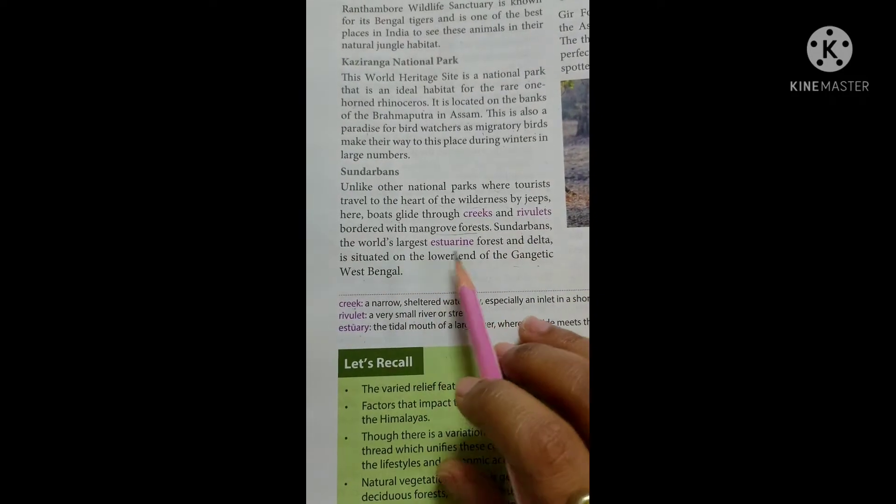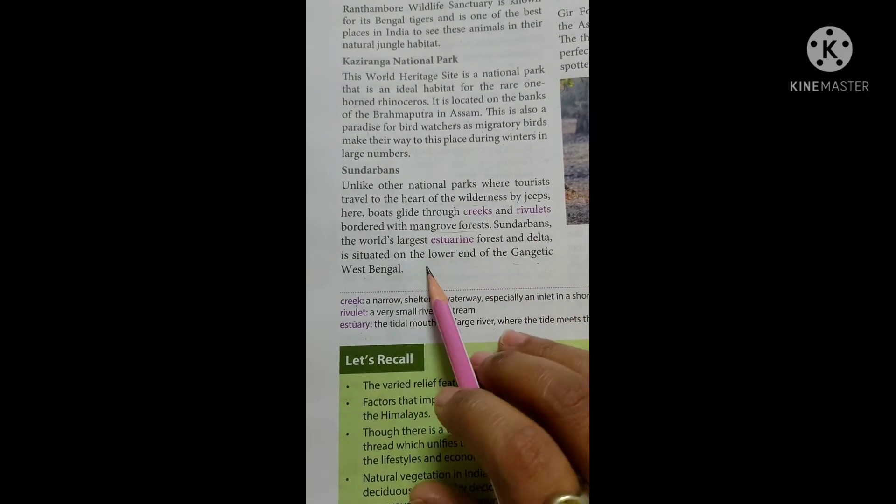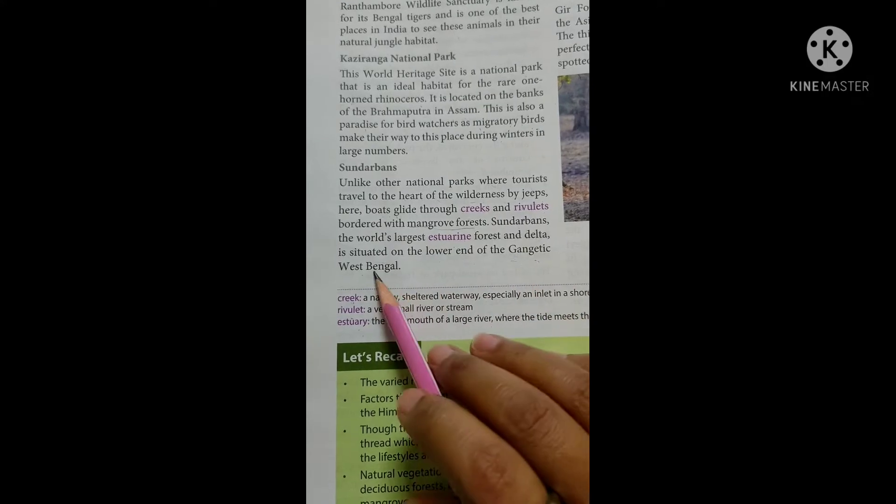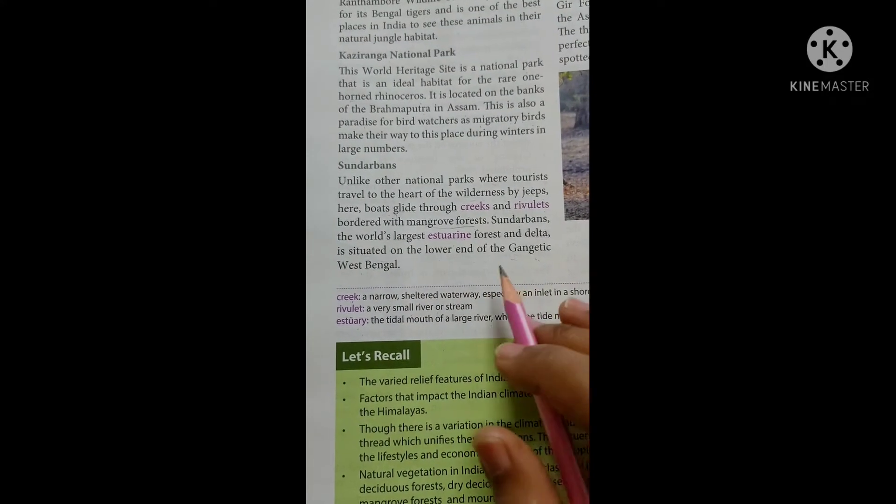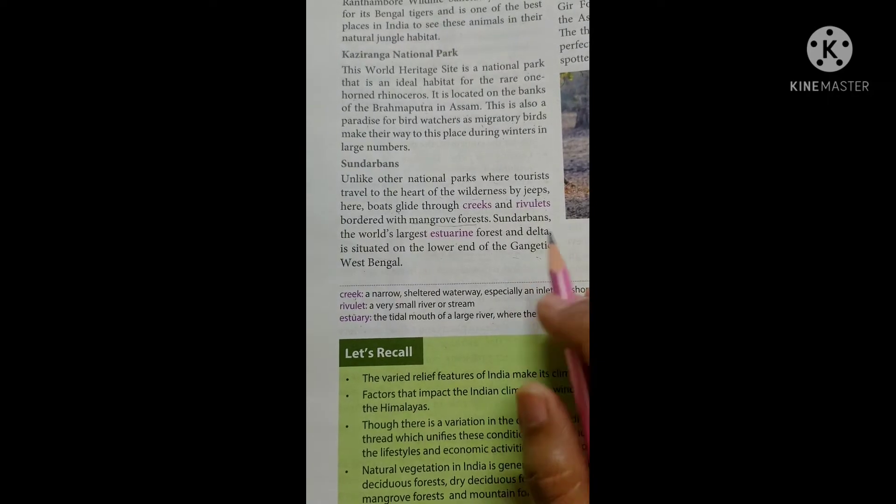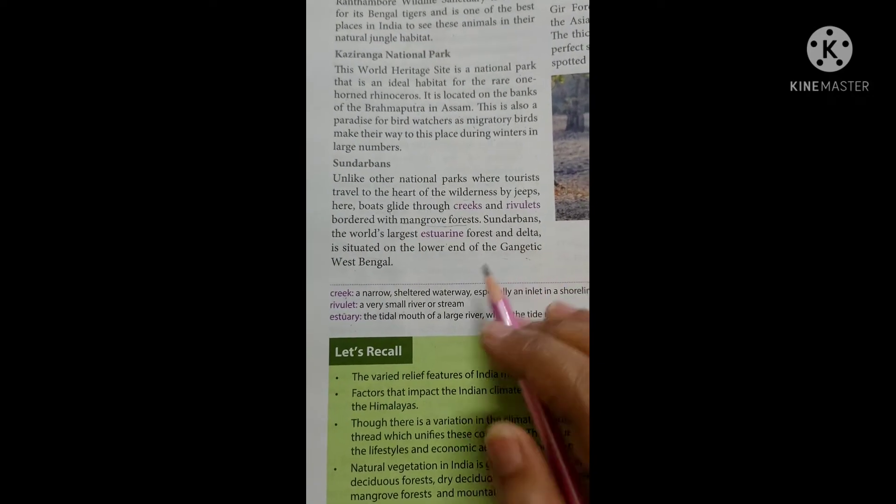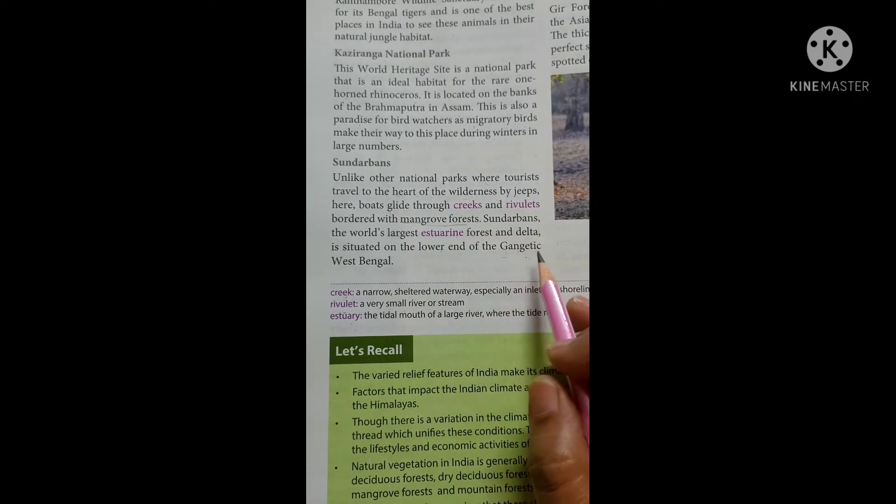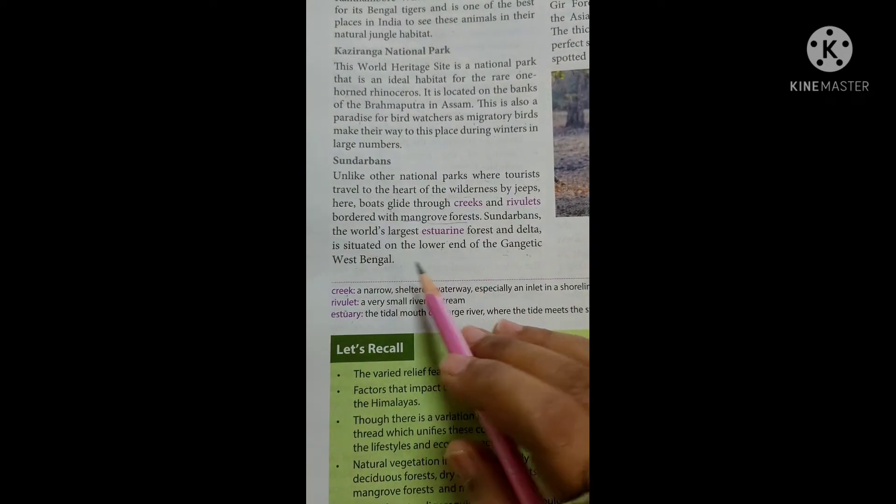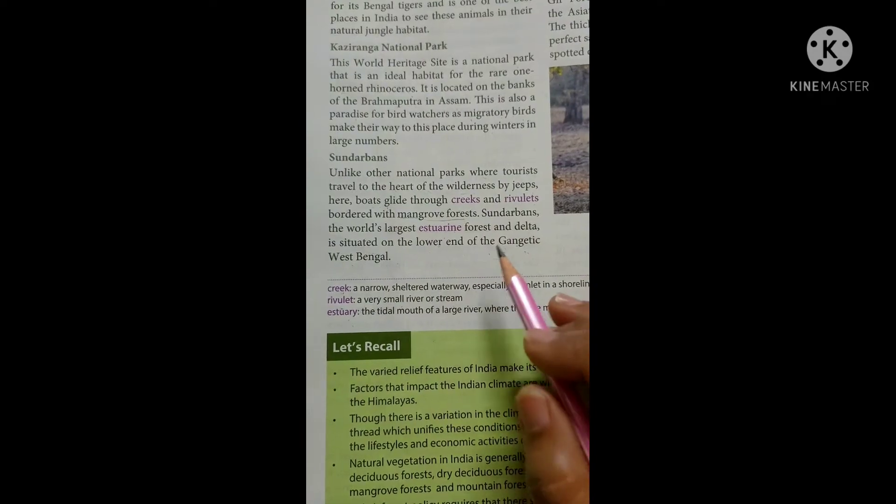Sundarbans, the world's largest estuary forest and delta, is situated on the lower end of the Gangetic West Bengal. Where is it situated? Ganga-Brahmaputra's delta, on the lower end of the Gangetic West Bengal, is where your Sundarbans national park is located.